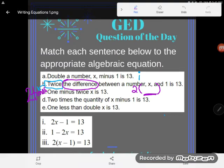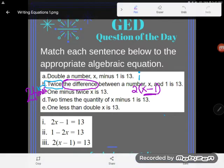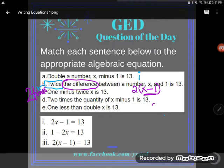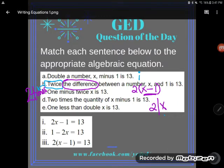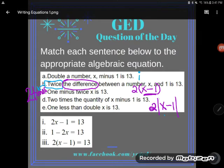So twice the difference, and I'm going to put the difference in here. So the difference of what? Well, let's keep reading. It says the difference between a number x and one. So I'm going to make a subtraction expression with x and one. And if you saw this on the GED, you might see it written like that, or you might actually see it in absolute value bars just to make sure that the answer is positive. That says the same thing. Two times the difference of x and one.